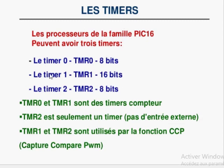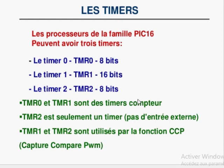Les timers sont au nombre de 3 : le timer 0 de 8 bits, le timer 1 de 16 bits, et le timer 2 de 8 bits. Le timer 0 et le timer 1 peuvent fonctionner en timer ou en compteur, avec horloge interne ou externe. Le timer 2 est uniquement un timer. Les timers 1 et 2 sont utilisés pour la fonction capture/comparaison afin de générer des signaux PWM.